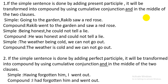Serial number two: if the simple sentence is done by adding a perfect participle, it will be transformed into a compound sentence by using the cumulative conjunction 'and' in the middle of the two clauses. Simple sentence: 'Having forgotten him, I went out.' Here we change the perfect participle phrase into a main clause, using subject 'I', then 'had' plus the past form. We add 'and' in the middle. The compound sentence is: 'I had forgotten him and went out.'